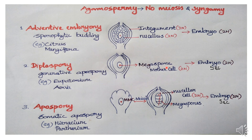Since the megaspore mother cell is in this form, it is diplospory — also called generative apospory — because the megaspore mother cell is related to the reproductive part. For example, Erigeron and Taraxacum plants.